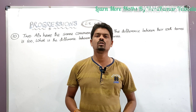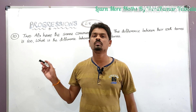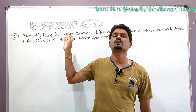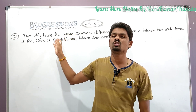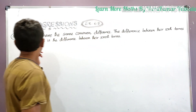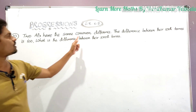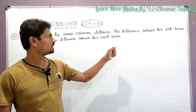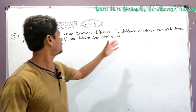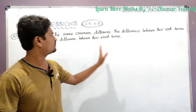Hello students, welcome to Learn More Math. Today we are going to solve a problem from the chapter Progressions, exercise 6.2, problem 10. The problem states: two APs have the same common difference. The difference between their hundredth terms is 100. What is the difference between their thousandth terms?